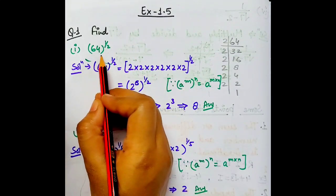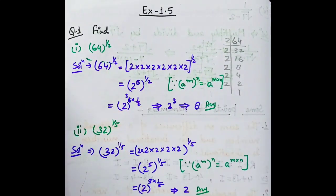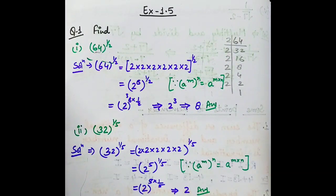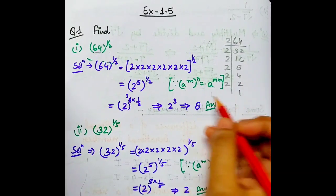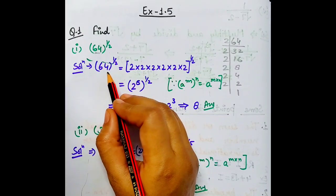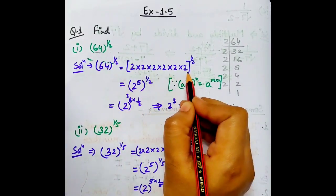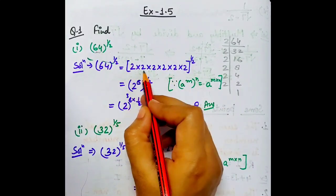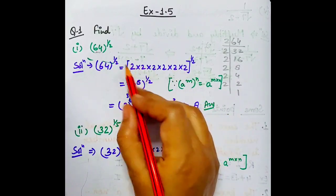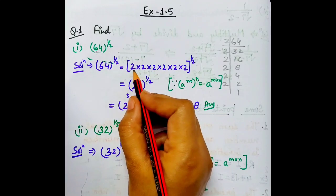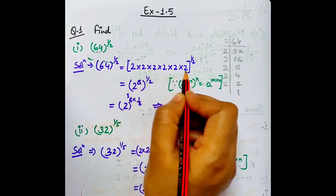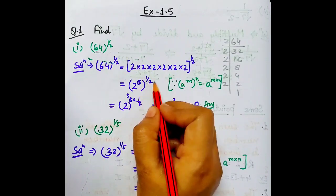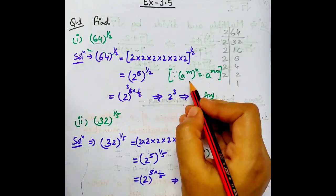Let's start. 64 to the power 1 by 2. Is type ke questions ko kaise solve karenge? Jo humein base diya gaya hai, isko hum iske factors karenge. Factors karne ke liye hum prime factorization karke dekhenge. 64 ko hum kis form mein likhenge? 64 ko jab 2 ko 6 times multiply karenge, to hum yahan 2 to the power 6, whole to the power 1 by 2 likh sakte hain.